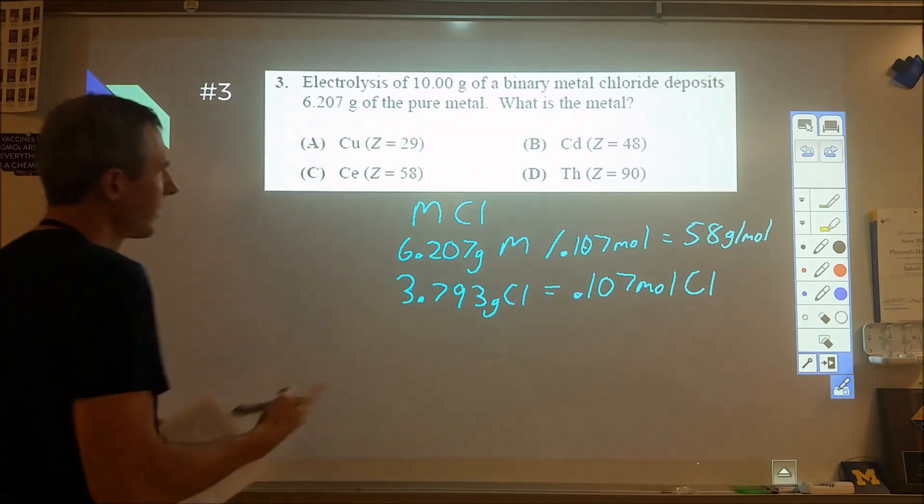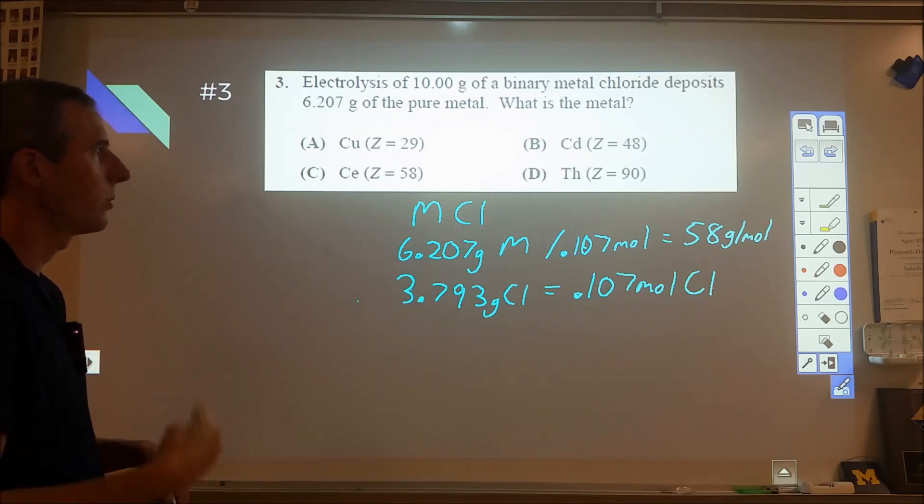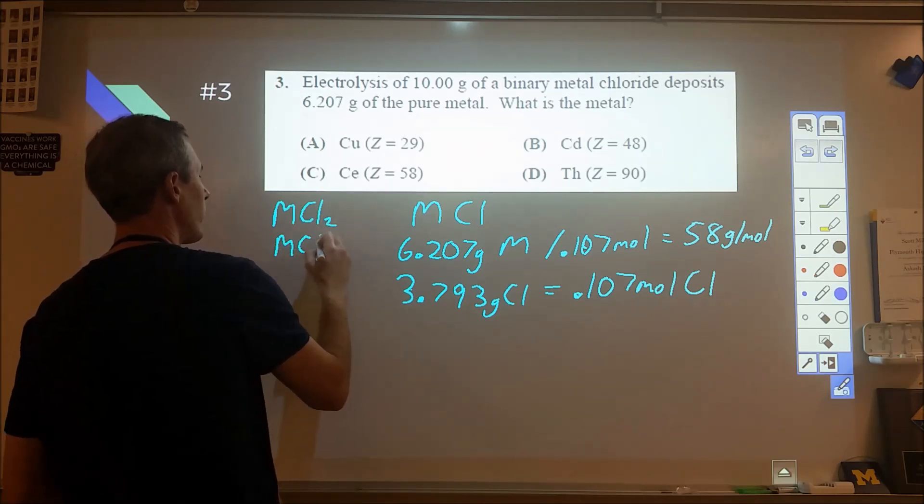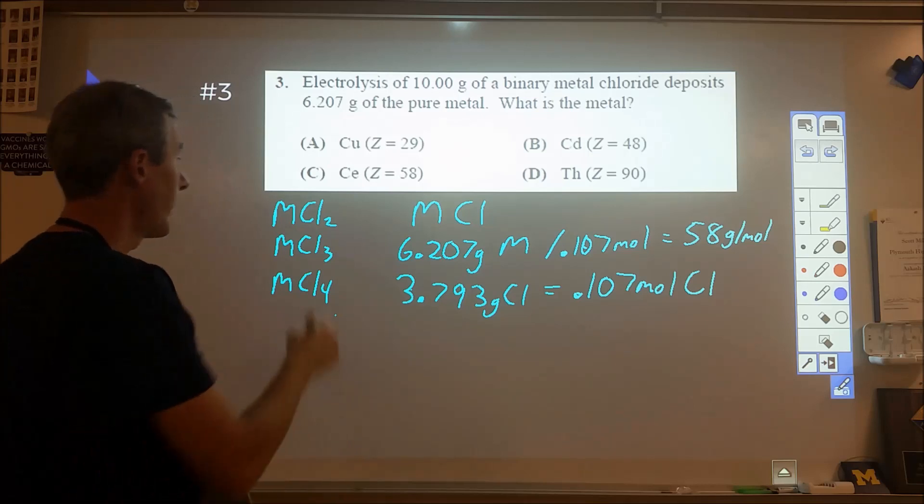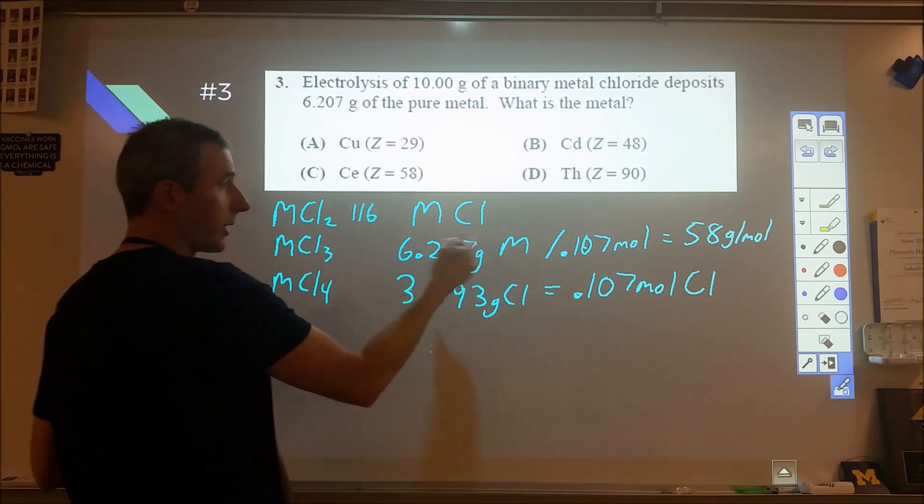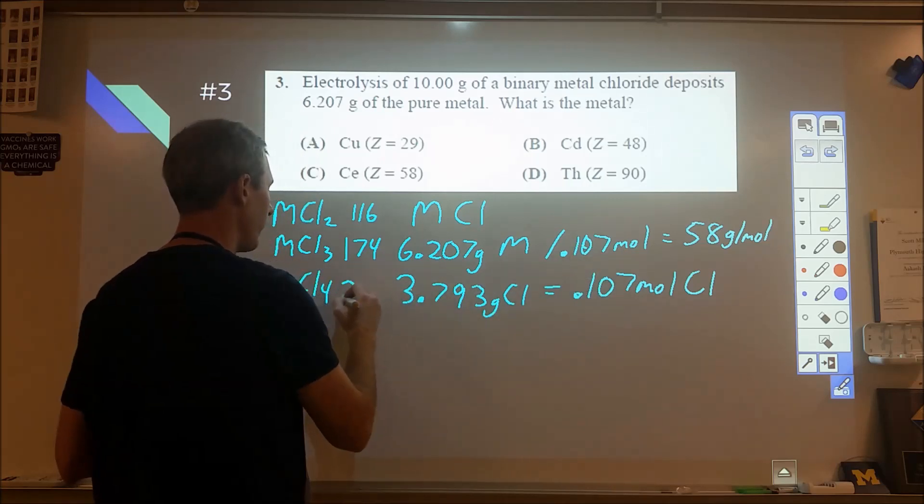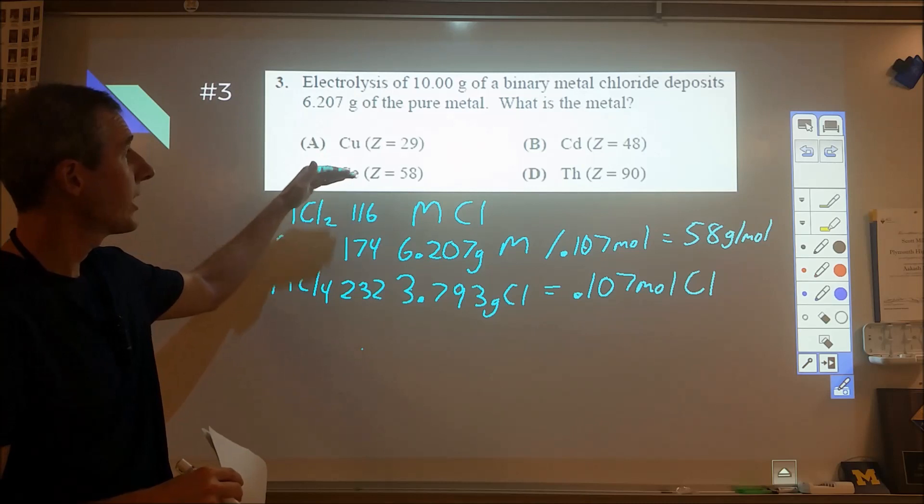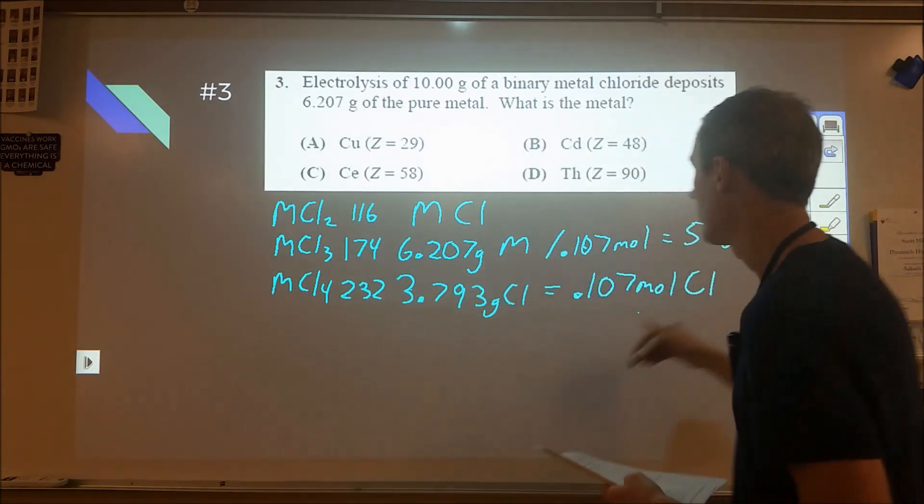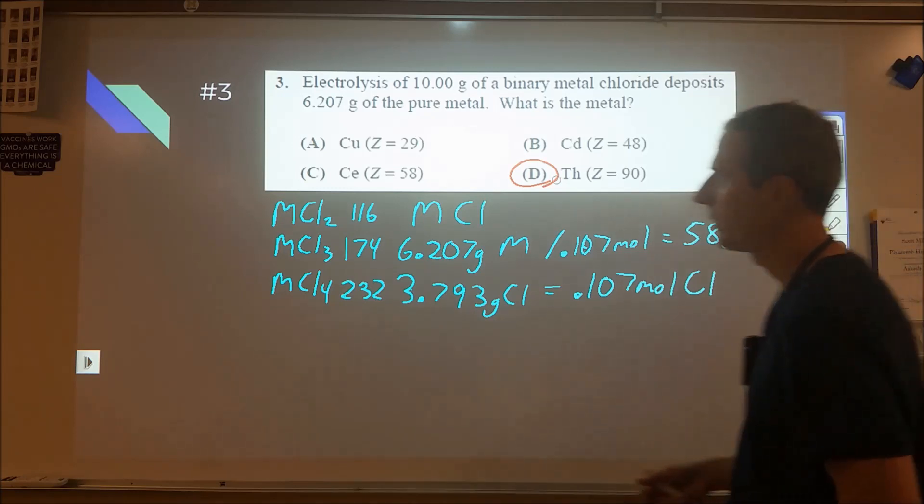I checked copper, that's 63 point something, not that. That was the lightest one. So I have to think what if it was plus two, plus three, plus four. If the metal is plus two, I'm looking at MCl2, half the moles, double the molar mass of 116. If triple, 174. If quadruple, 232. We check those against these compounds in a charge that makes sense. The one that works out is thorium at a four plus charge with atomic mass of 232. Therefore D was our correct answer.